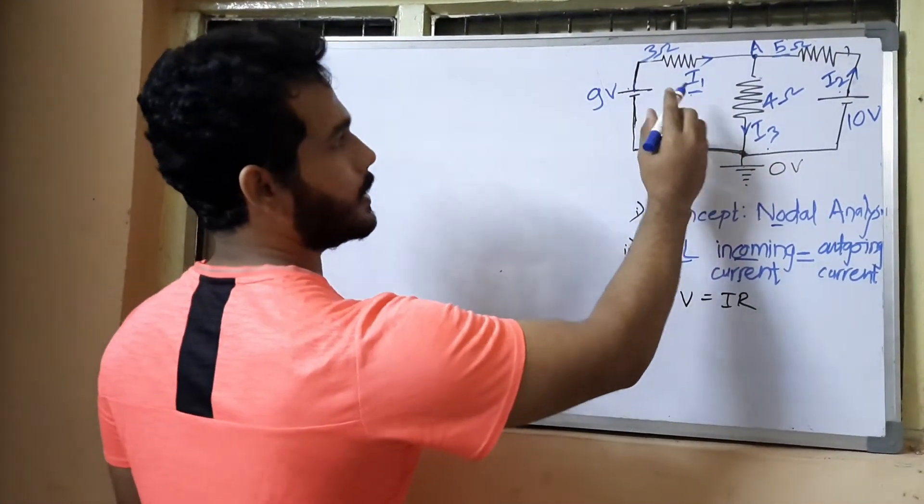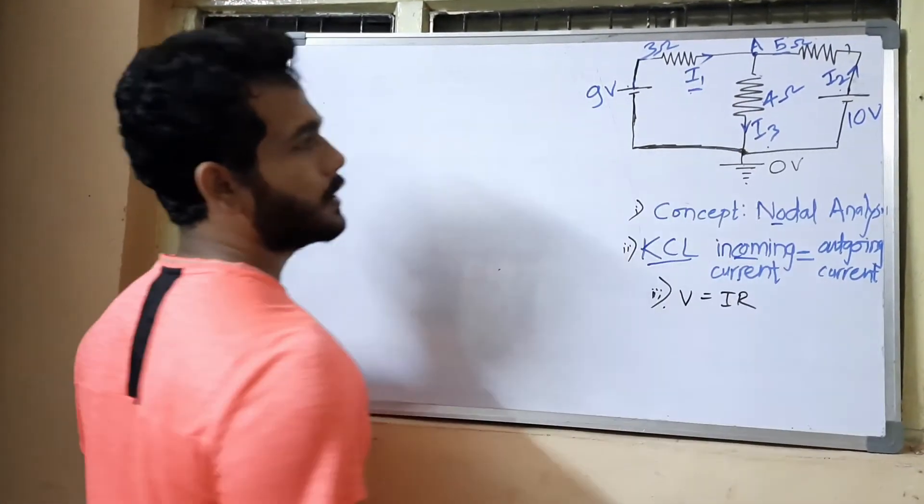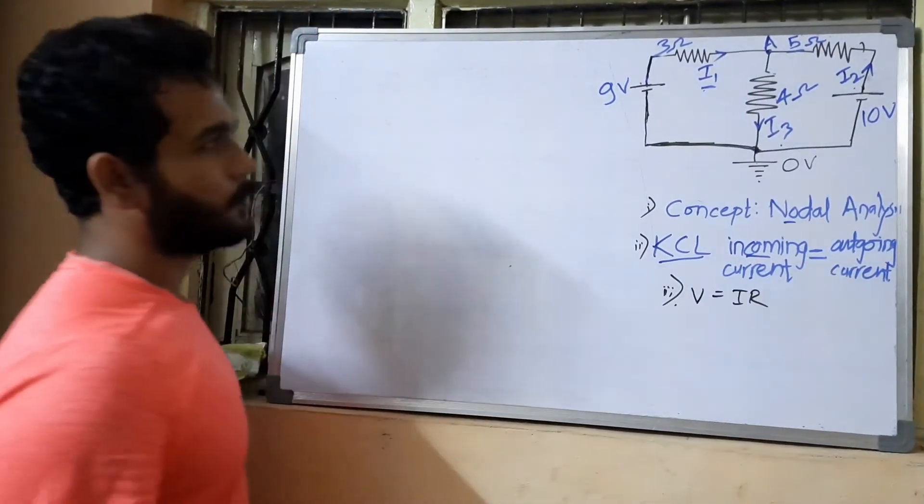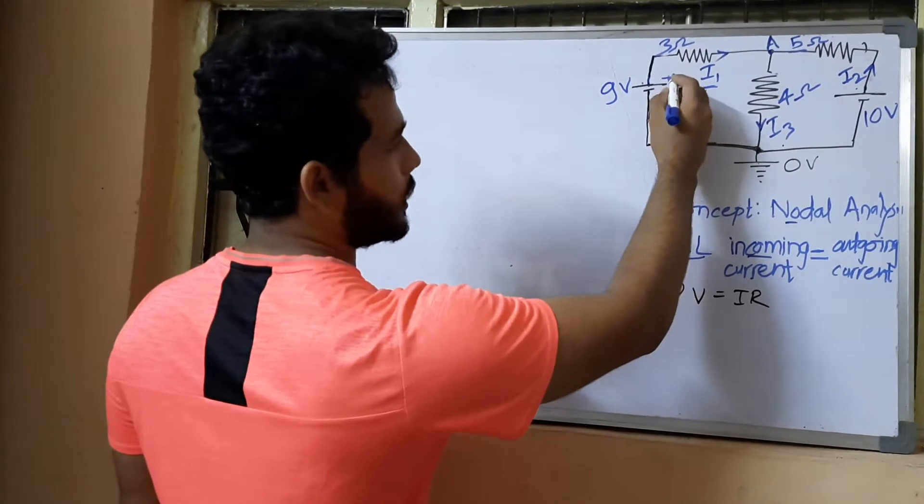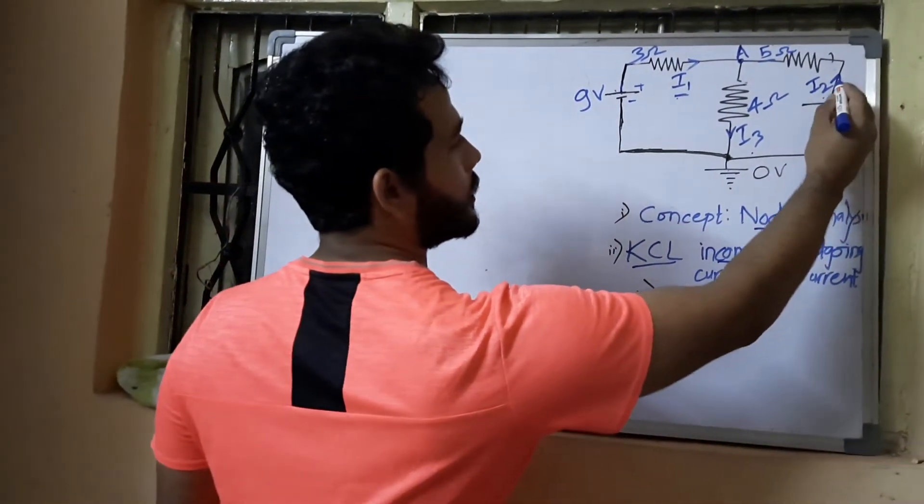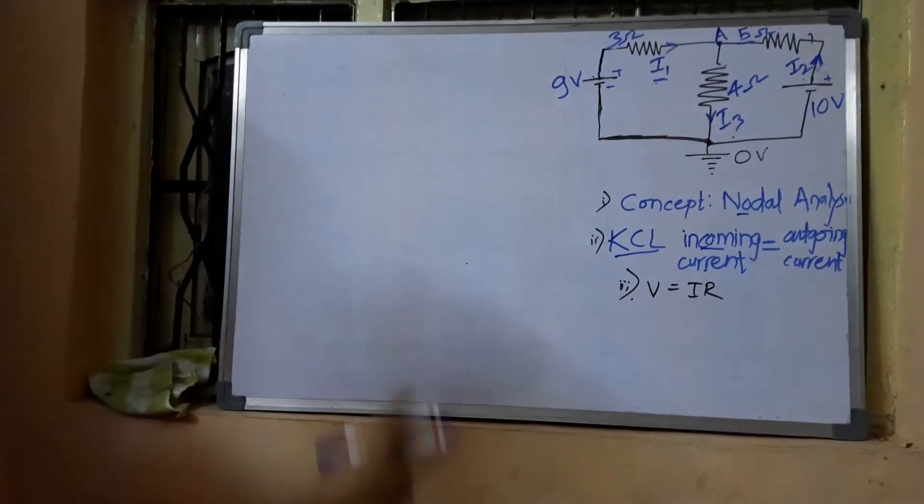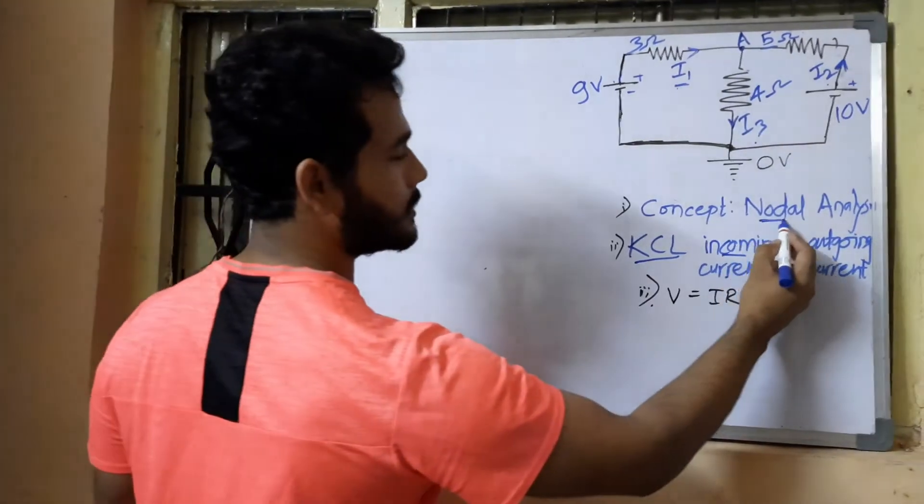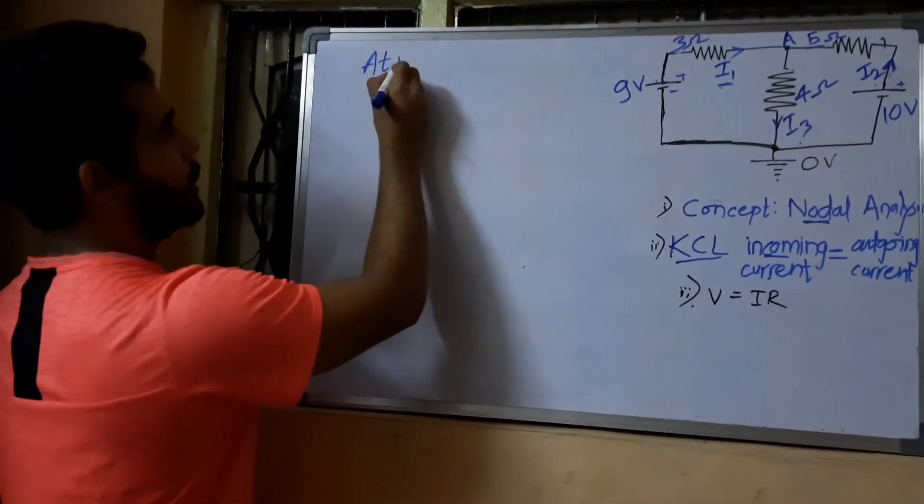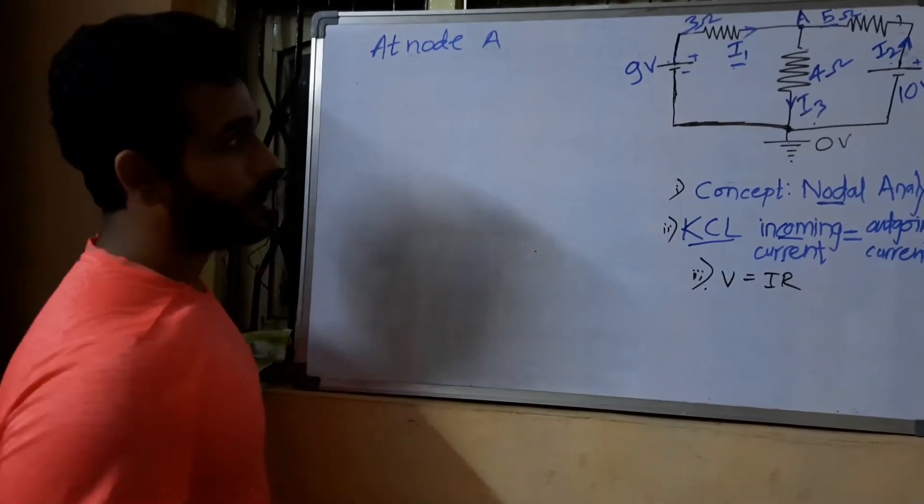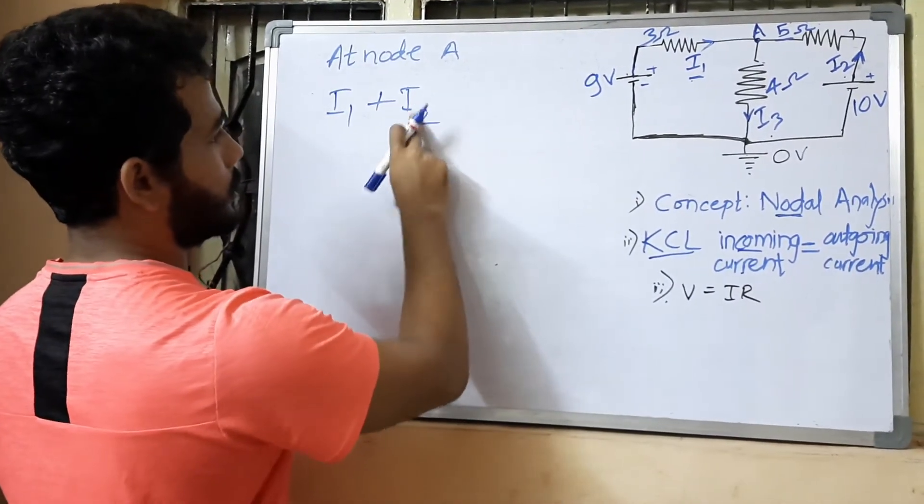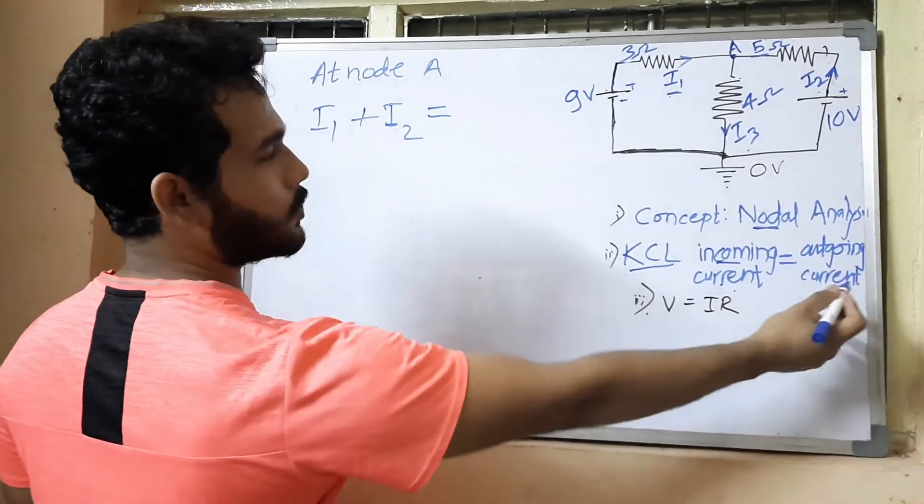For nodal analysis three points are important. First of all, draw the circuit and then assign direction of currents. It is based on your choice; you can use any direction. Generally current flows from positive plate to negative plate. We have to find these currents using nodal analysis using Kirchhoff's law and Ohm's law. At node A, what are incoming currents? i1 plus i2 is equal to outgoing current i3.